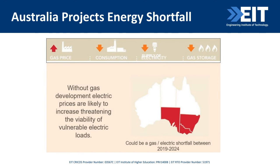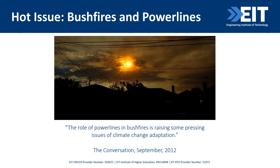There is a shortfall of energy, although utilities are not making much money as they were before all these renewables came into play. In Australia, we are having huge issues with bushfires and power outages. This is becoming a huge problem as far as adaptation to climate change is concerned, and we are having more frequent bushfires than before.